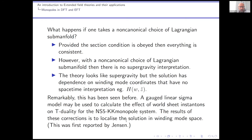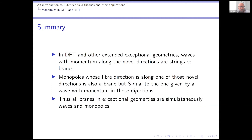So what we've said so far is that in DFT and other extended exceptional geometries, waves with momentum are strings or branes, and the monopoles in those theories are the S-duals, which gives us branes of different dimensions. All branes in exceptional geometries appear simultaneously as waves and monopoles.